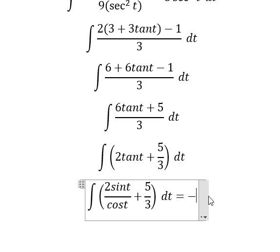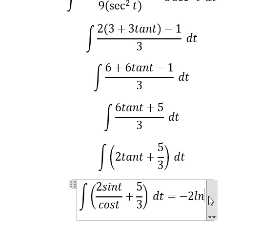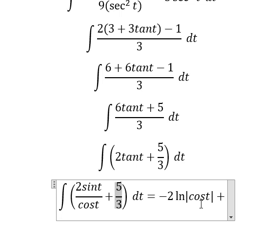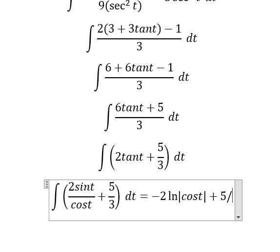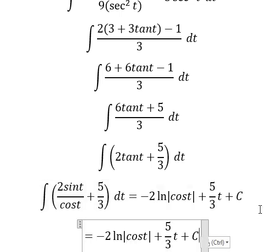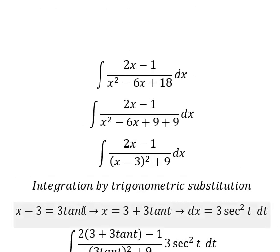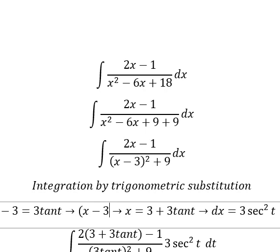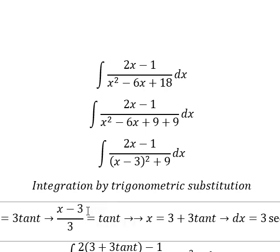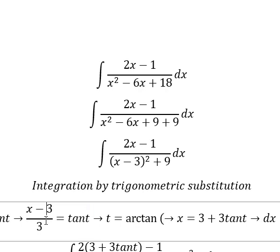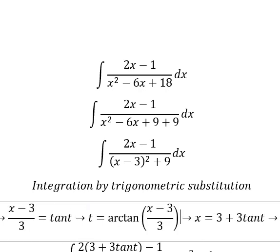The integration of this gives us t. About t, that is this expression, so we need to divide both sides by 3. So t equals arctan of this. I will substitute this back to change for t.